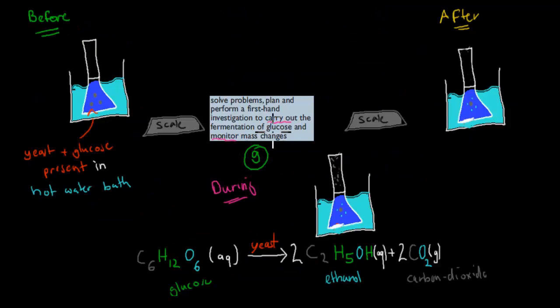This was an experiment, a first-hand investigation to carry out the fermentation of glucose and monitor mass changes. What you would have done, you would have had a beaker with yeast and glucose inside in a hot water bath. You would have first put it on a scale to weigh how much you weigh before you did anything. During the actual experiment, the glucose which was inside the beaker was fermented by the yeast, and that produced, for every glucose, two ethanol and two carbon dioxide. The carbon dioxide, because they're gas, they would have escaped. And the ethanol would have started to appear. Afterwards, we would have re-weighed our beaker, and this would have less weight than beforehand. The reason why is because, for fermentation, you lost these carbon dioxide molecules.